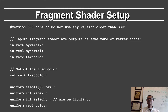We have some uniform variables. The texture corresponds to the texture. IsText says: are we texturing or not? IsLight: are we lighting or not? And the uniform vec3 color.